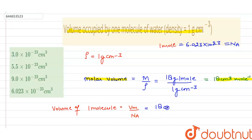So here the molar volume is 18 centimeter cube per mole and the Avogadro number is 6.023 × 10²³ mole inverse.